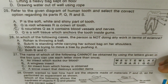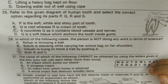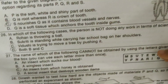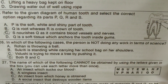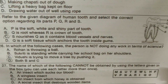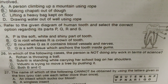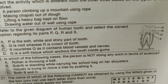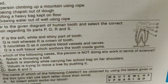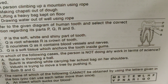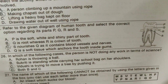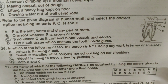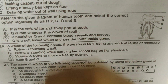Refer to the given diagram of a human tooth and select the correct option regarding its parts P, Q, R, and S. P is enamel, Q is dentine, R is the gum, and S is the pulp. S nourishes Q as it contains blood vessels and nerves — and that is right.